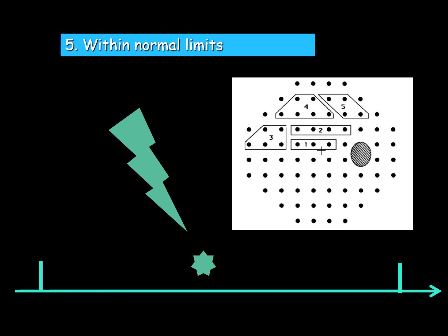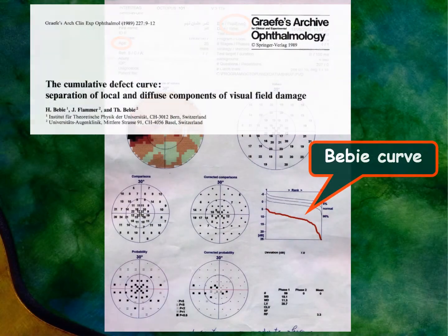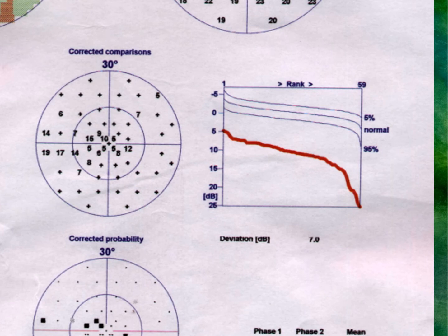'Within normal limits' means the result is within the normal range. The BB curve — also called the defect curve or cumulative defect curve — is named after its authors, whose names were BB. They take the values of all test points and arrange them from the best to the lowest, with the normal range shown as a reference band.